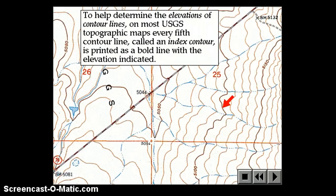To help determine the elevations of contour lines, on most USGS topographic maps, every fifth contour line, called an index contour, is printed as a bold line, extra dark, and the elevation is written along it. So this is the 5150 index contour. This is the 5100 index contour. And we don't even need to look at the contour interval because we can see if this is 5100 and this is 5150, we have 1, 2, 3, 4, 5 jumps in elevation to make up 50 feet of elevation. 50 divided by 5 is 10, so our contour interval on this map must be 10.